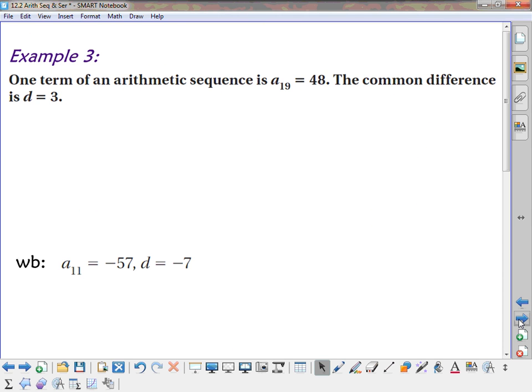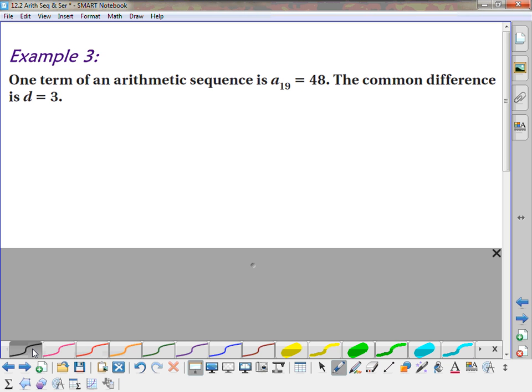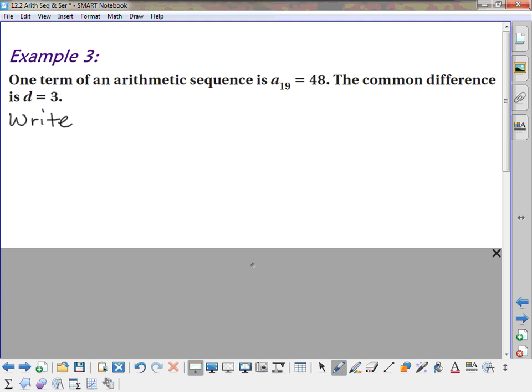All right, so let's take a look at this here. Now, we've got one term of an arithmetic sequence that is a sub 19 equals 48, and the common difference is 3. And we are going to write the rule for this sequence. So, this is kind of like what we did on warm-ups. I've given you a point on the line, and I've given you the slope. The point on the line is 19, 48, if we were graphing it. And my slope is what? 3, that common difference.